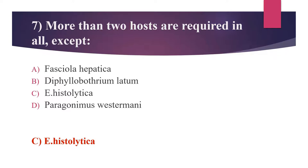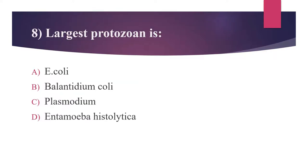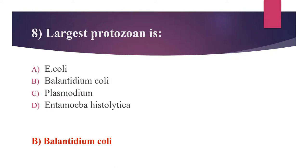The eighth question: What is the largest protozoan? Option A: Entamoeba coli. Option B: Balantidium coli. Option C: Plasmodium. Option D: Entamoeba histolytica. The answer is Option B, Balantidium coli. The size of its trophozoite ranges from 40 micrometers to 200 micrometers. Balantidium coli is the only ciliate that infects humans.